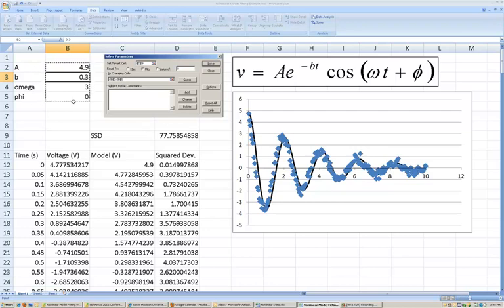Additionally, below that, if you have certain constraints on your model, such as maybe A cannot be negative, or B has to be within a certain range of values, you can add those constraints in this box. But, for this purpose right now, we do not need to add any constraints.